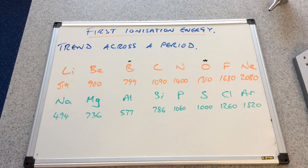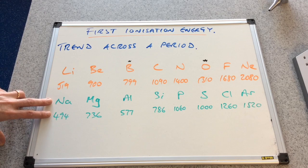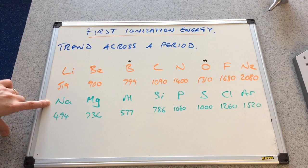And just for a point of comparison, I've included the first ionisation energies for period 3. So that's sodium to argon now.